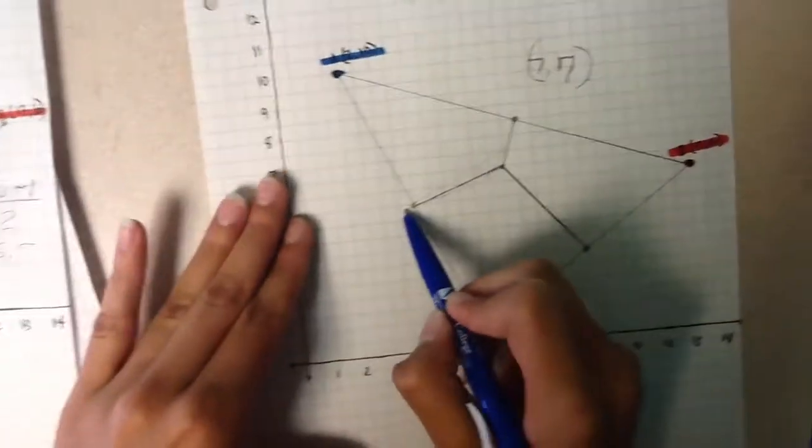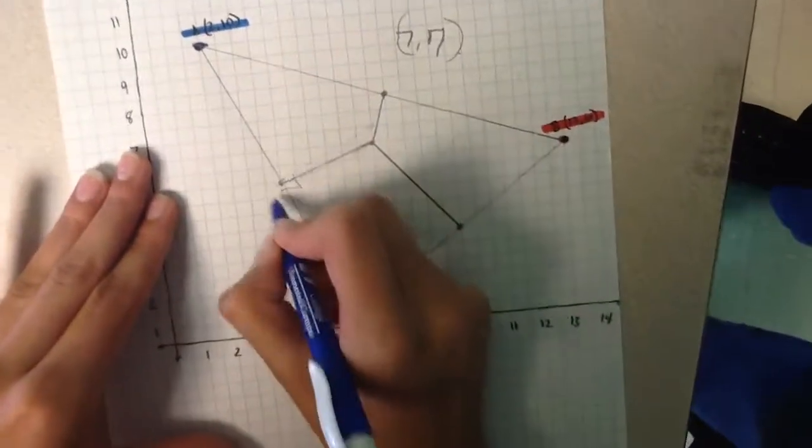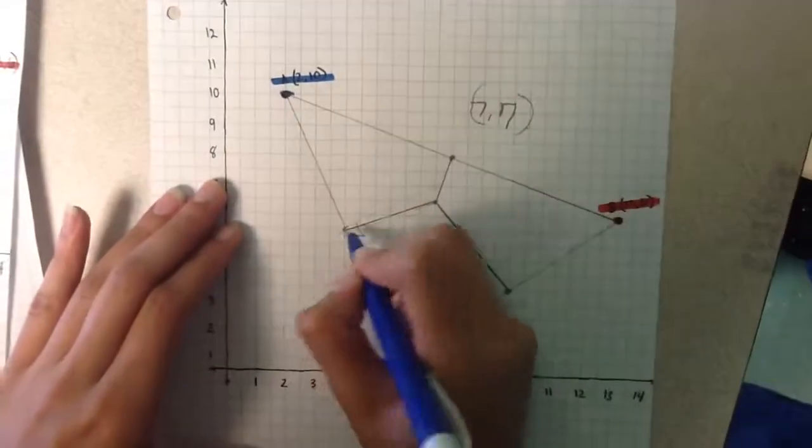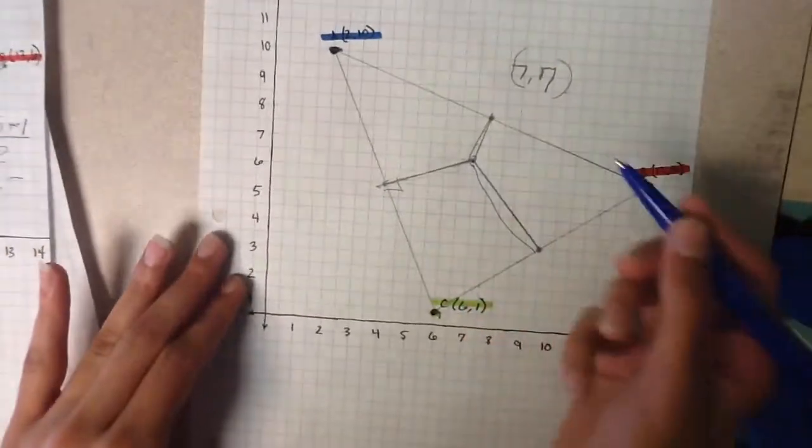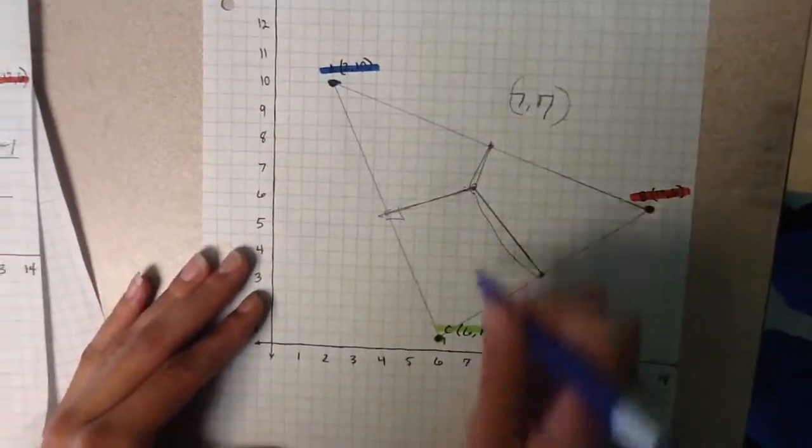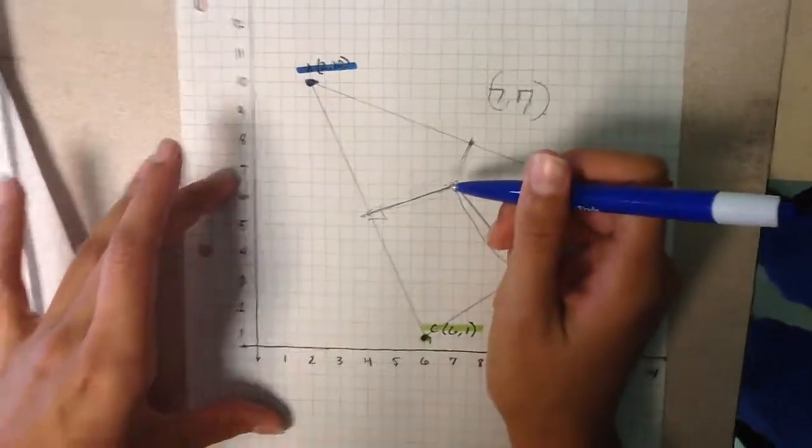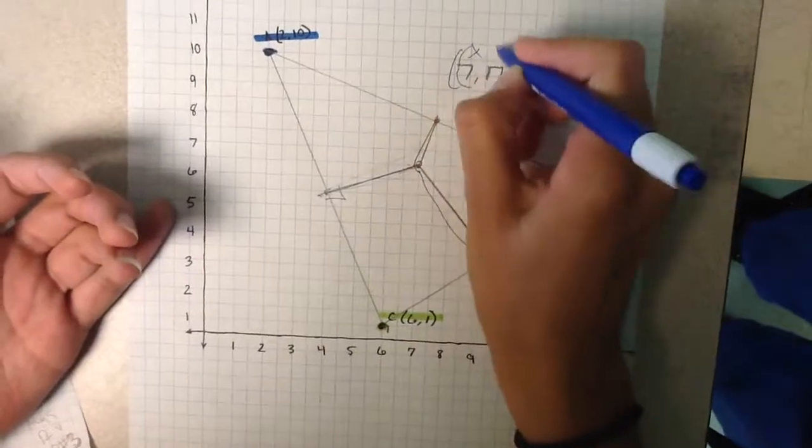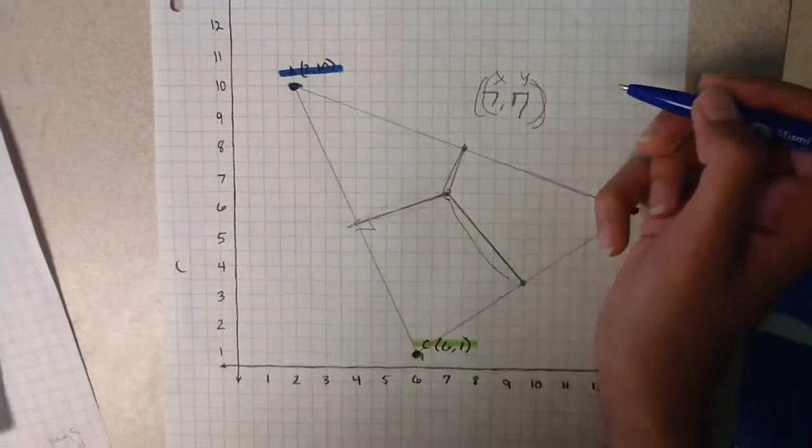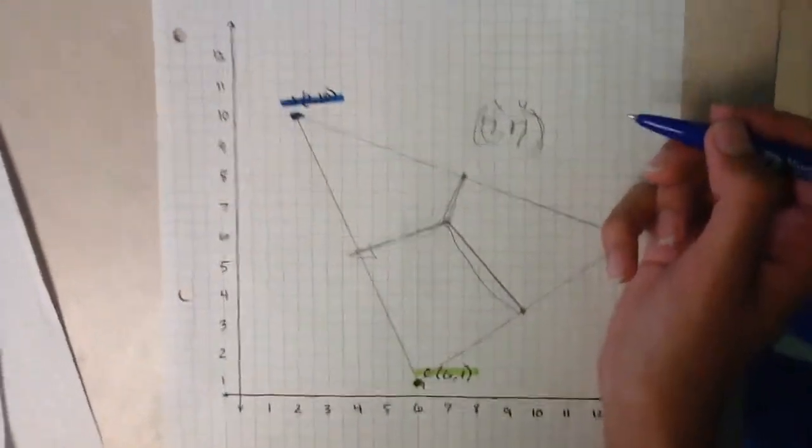After doing that, what you're going to do is just draw a 90-degree angle line out. You're going to do that until all three of the lines intersect. Once doing that, it should intersect at coordinates 7, 7, basically, for X and Y. That basically solves this problem.